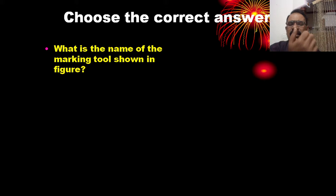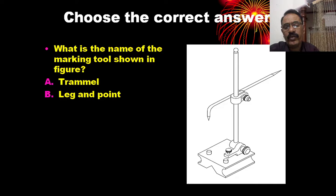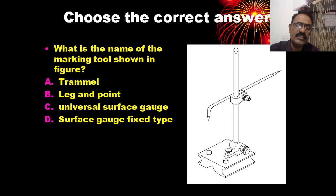What is the name of the marking tool shown in the figure? The options are: Trammel, Legend Point, Universal Surface Gauge, Surface Gauge Fixed Type. This is the universal surface gauge. C is the correct answer.